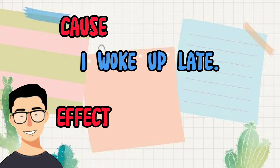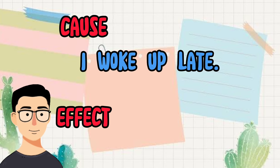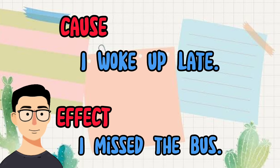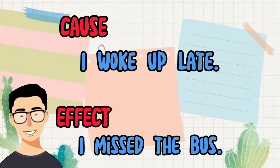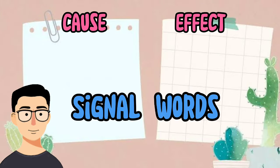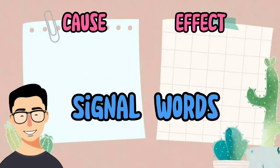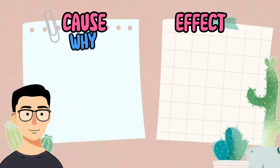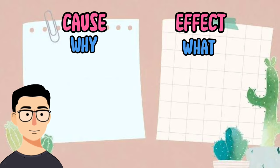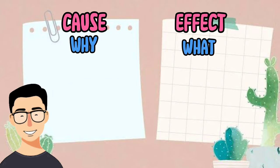Signal words can be used to indicate the cause, that tells us why, and the effect, that tells us what. Here are some signal words for cause and effect.